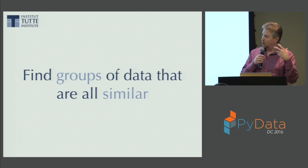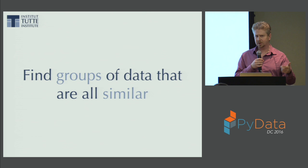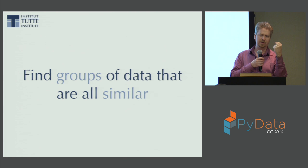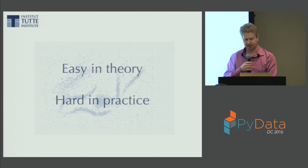The key is finding groups of data that are similar — but how do you define groups, and how do you define similar? If you're partitioning, you've got hard constraints: you want balanced partitions, and that's maybe more important than every point within each cluster being exactly the same. That's easy in theory but hard in practice.